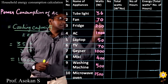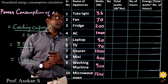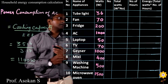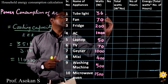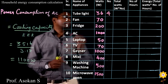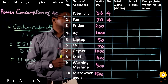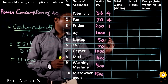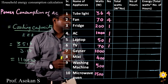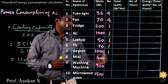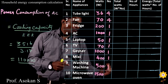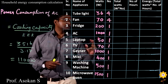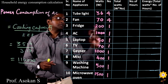So these are the loads connected to the home. Now we talk about the numbers. For example, I take tube light — 4 numbers, fan — 4 numbers, fridge — 1, AC — 1, laptop — 1, TV — 1, geyser — 1, mixie — 1, washing machine — 1, microwave oven — 1. These may vary. Suppose if you are using 2, just put 2 here. That is all.